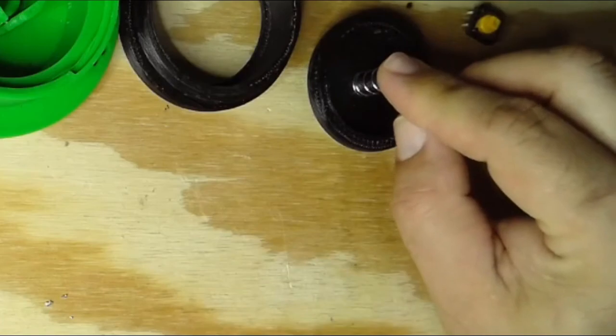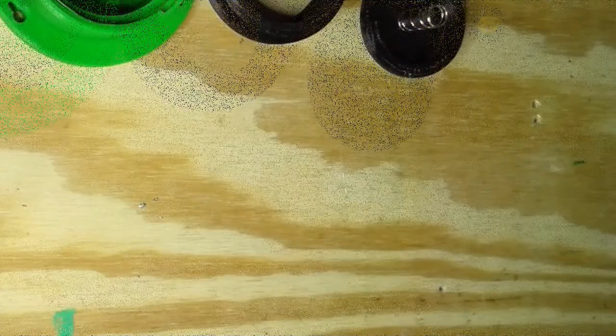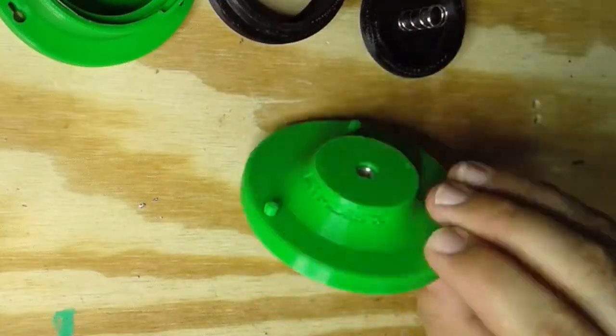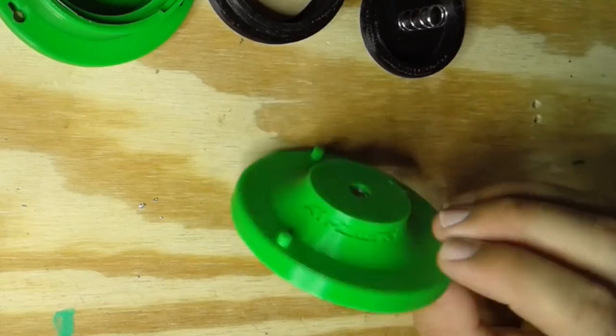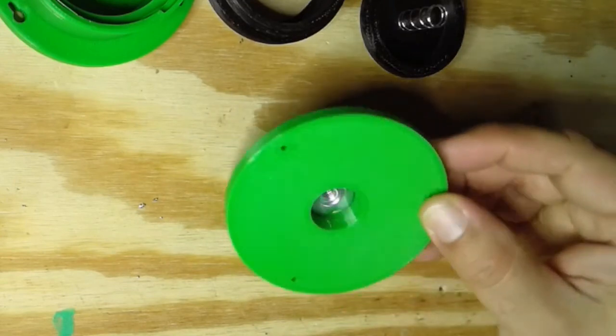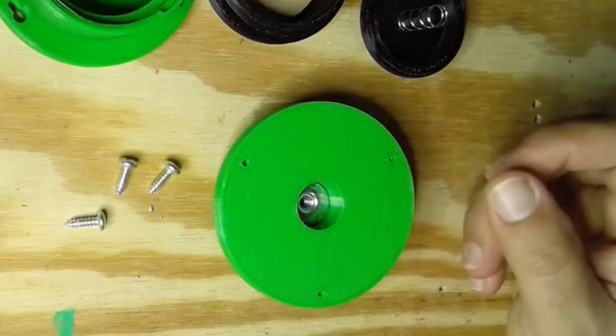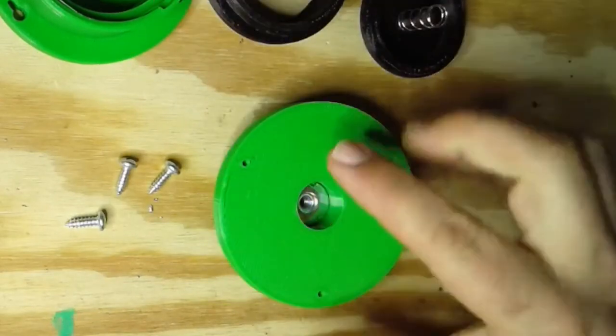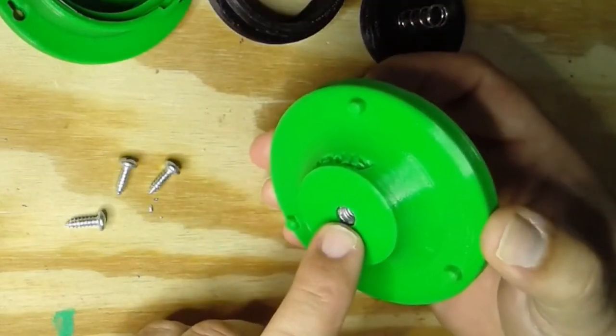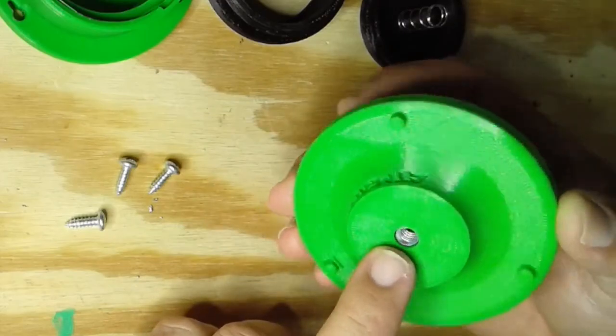Then once we have the button working, we will actually add this switch mount. This is from a different project but it'll work great. We've got three screws to screw this base into this, and then we'll be able to mount it on anything that has a quarter 20 camera mount.